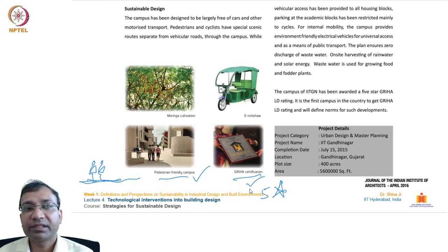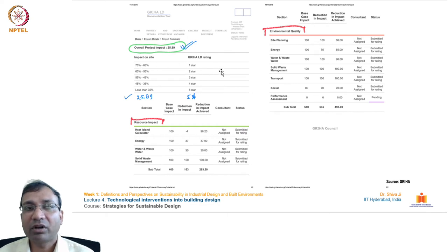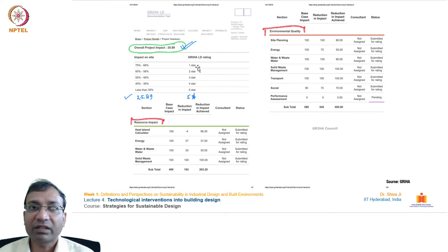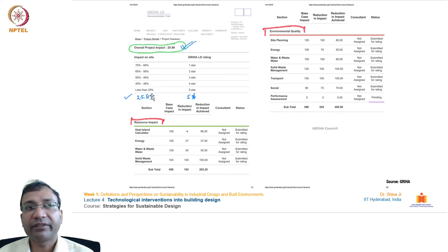The campus is pedestrian-friendly and received GRIHA five-star rating — you can see the plate they received, one of the most efficient designs in recent times. Looking at the GRIHA LD documentation from the GRIHA website, the star rating slab works as follows: if the impact is in the range of 66-75%, the project receives one star; 56-65% receives two stars; 46-55% three stars; 36-45% four stars; and less than 35% receives five stars. This project's overall impact is 25.89%, comfortably falling under the threshold of 35%, which is why the rating given is five stars.